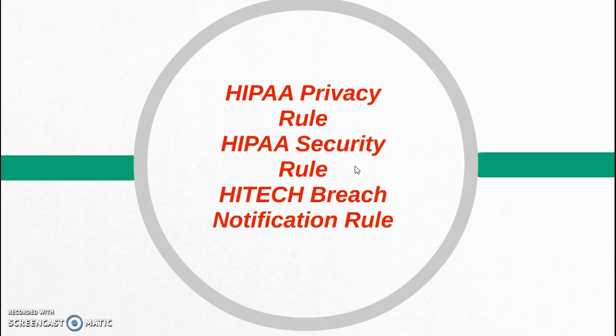The HIPAA security rule requires covered entities to establish administrative, physical, and technical safeguards to protect the confidentiality, integrity, and availability of health information. Providers have to comply through the use of encryption, access control, passwords, log files, and backing up their systems regularly. They also have to develop security policies to handle any breach of their system or violations when they occur, keeping the patient's health information as protected and unbreachable as possible.